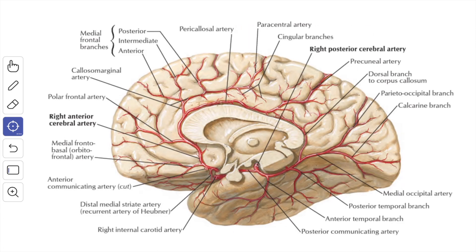This diagrammatic picture shows the medial surface of the cerebrum. Here is the anterior cerebral artery, which then curves around the genu of the corpus callosum. The branches given off distal to the anterior communicating artery supply the medial part of the orbital surface of the frontal lobe.